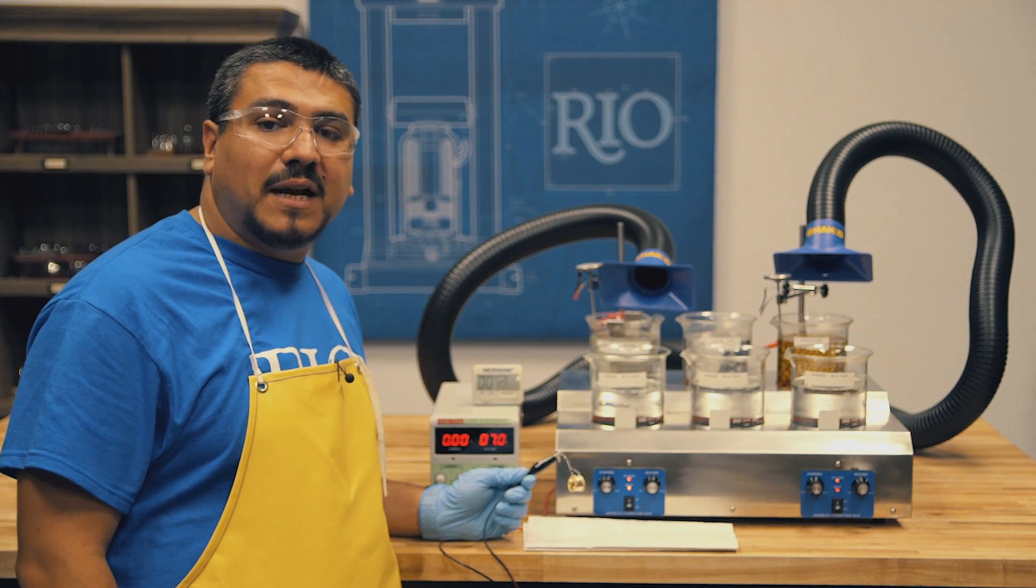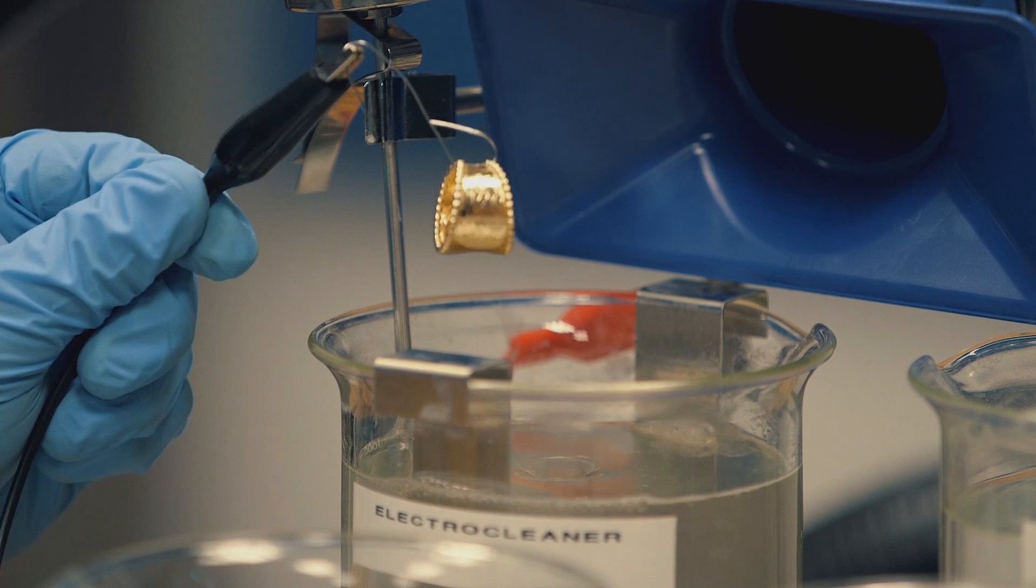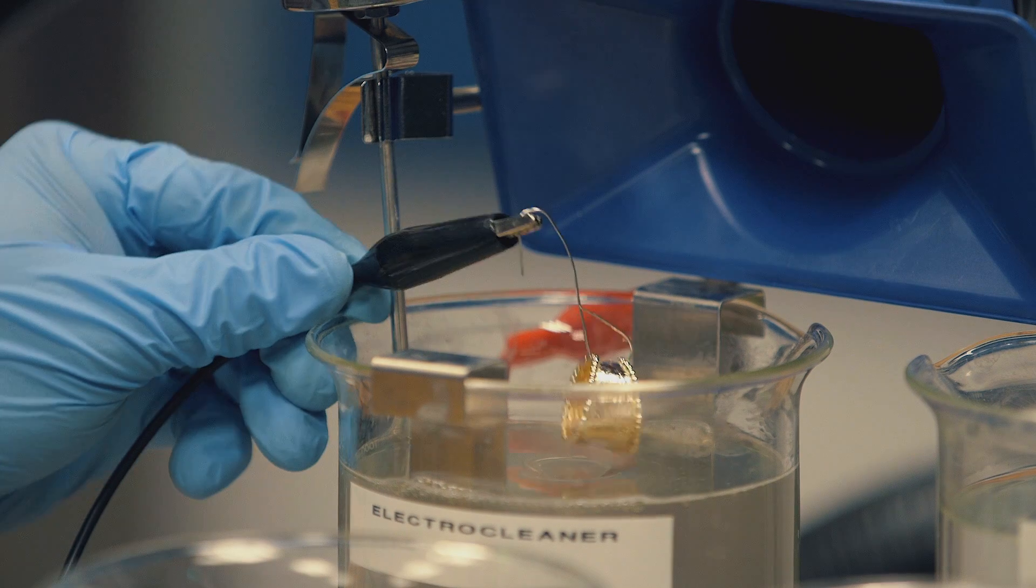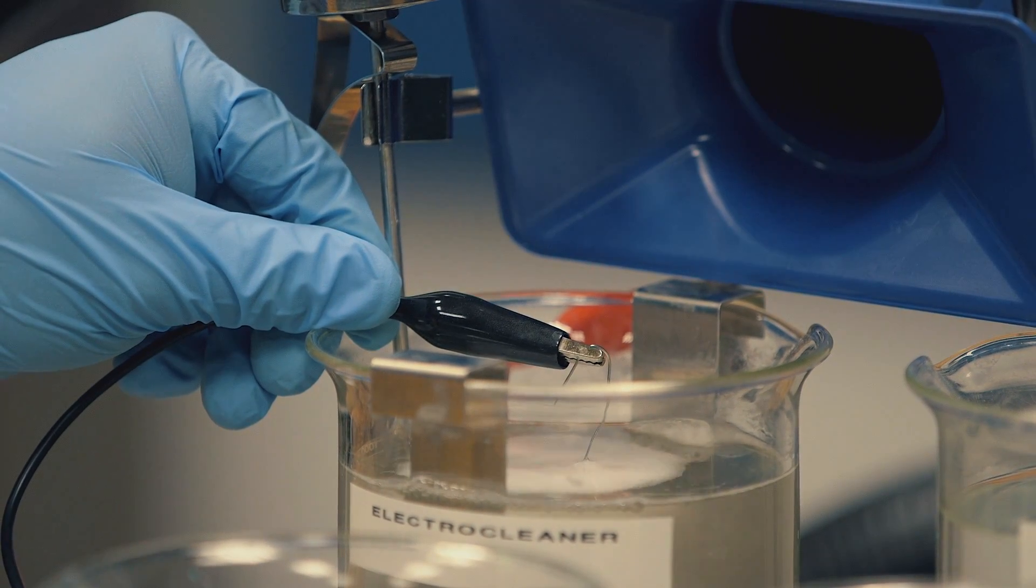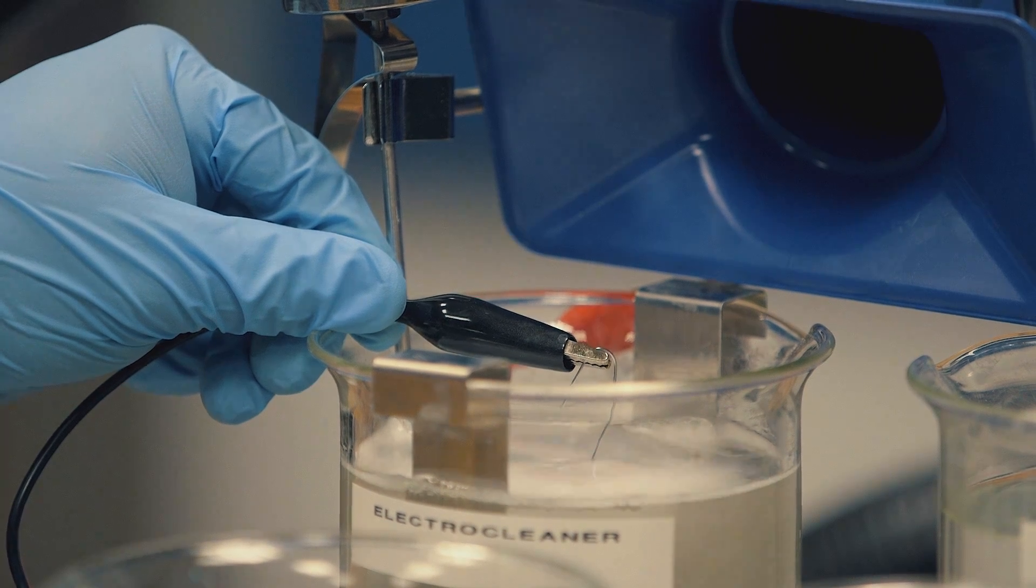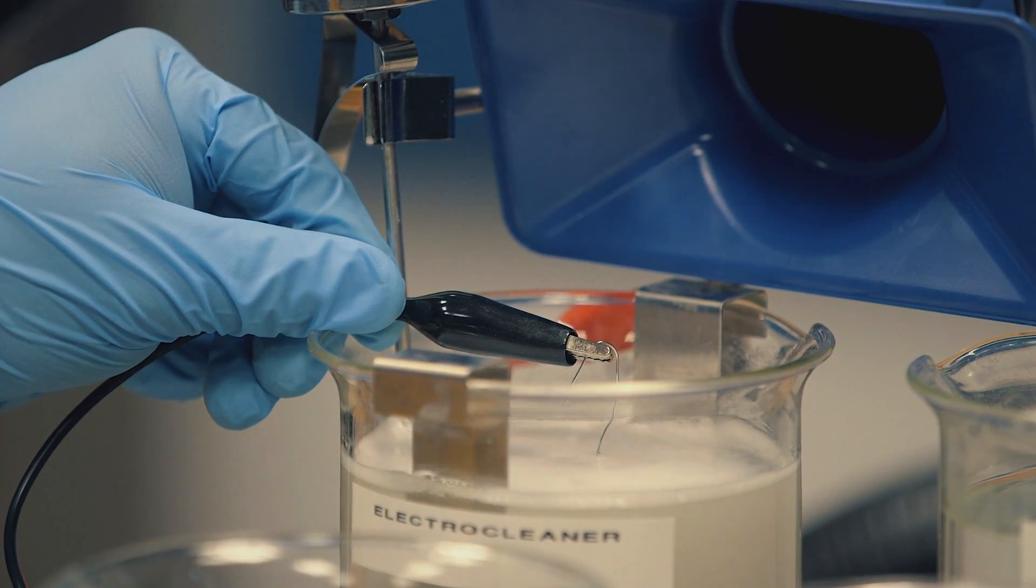Our first step in the plating process is to electro clean the piece. We're going to electro clean for 30 seconds. The positive lead is attached to our stainless steel anode. You will see when we go into the electro cleaner, hydrogen bubbles form on the surface. This degreases and removes any dirt, oils, or contaminants from the surface.